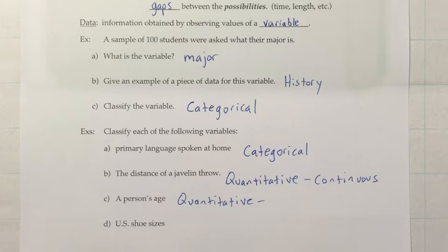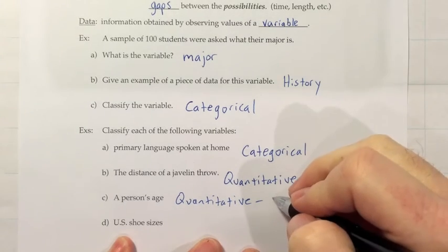People that are 21.37, if you ask them how old they are, they'd probably just say 21. But the type of variable you have is not about how it's typically reported. It's about what's possible. And since those in-betweens are possible, it's a continuous variable.